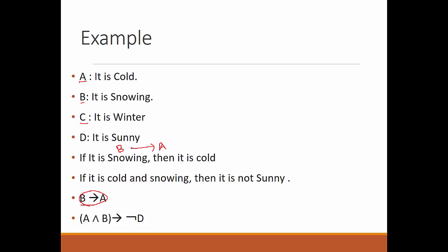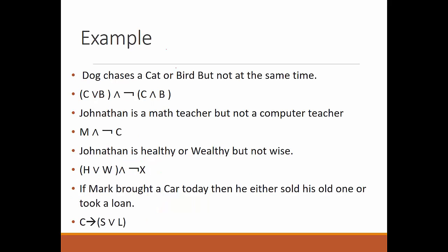'If it's cold and snowing then it's not sunny' — we will have a conjunction: cold is A, snowing is B, and not sunny uses a NOT operator with D. So we represent this as A AND B implies NOT D, as shown on this slide.